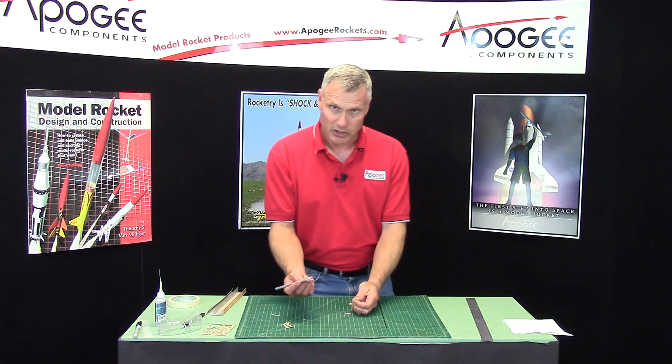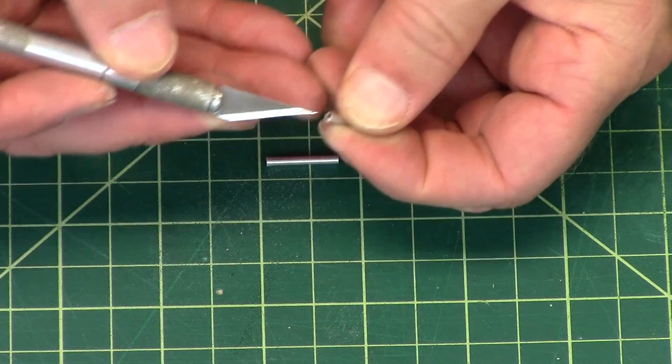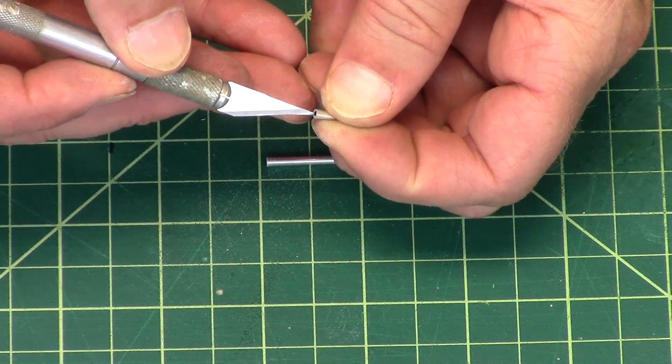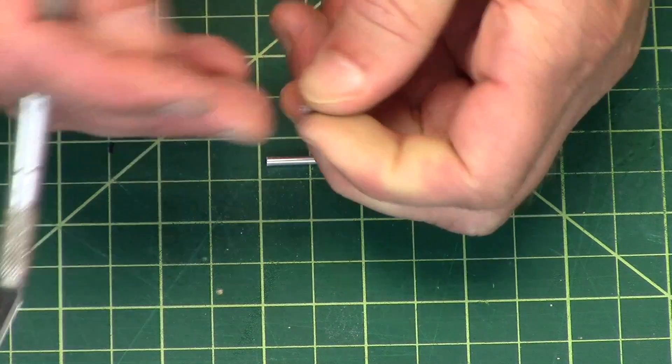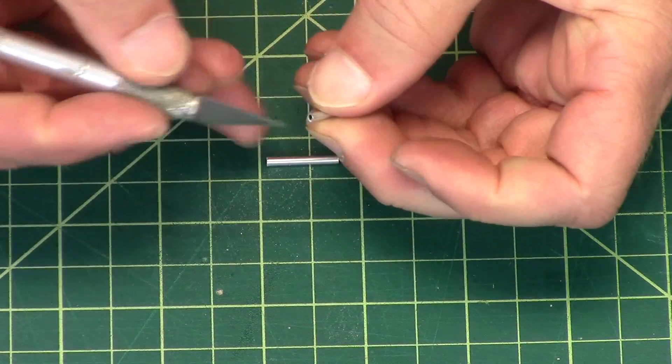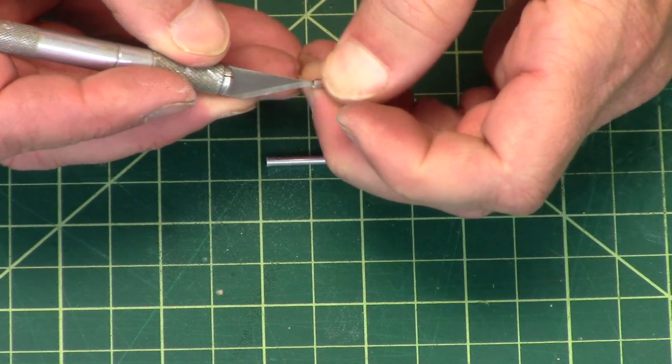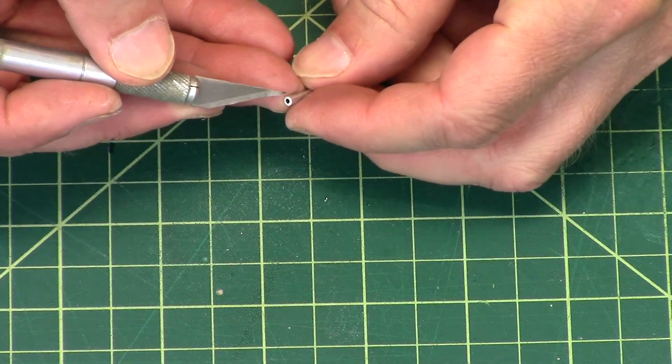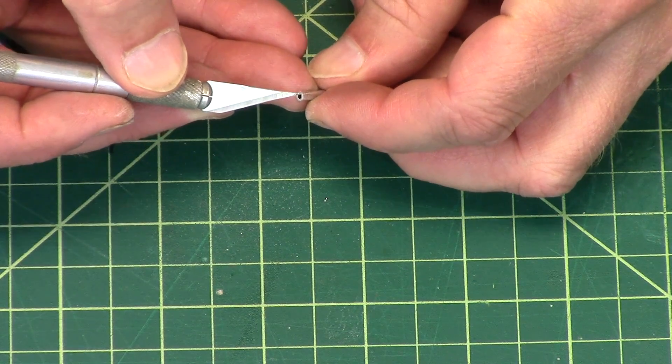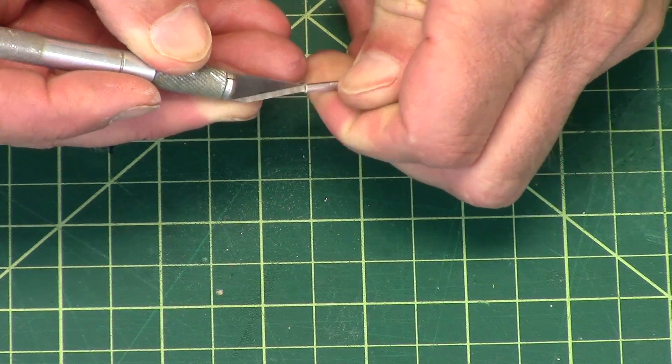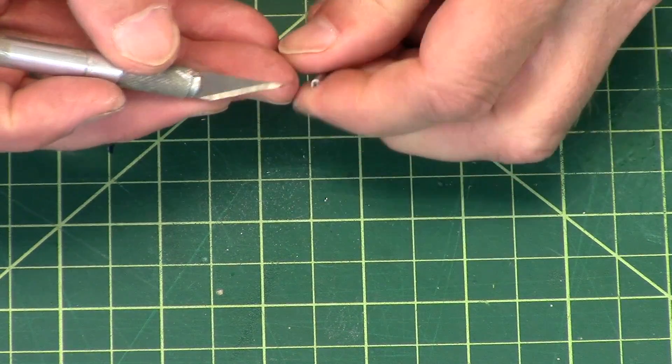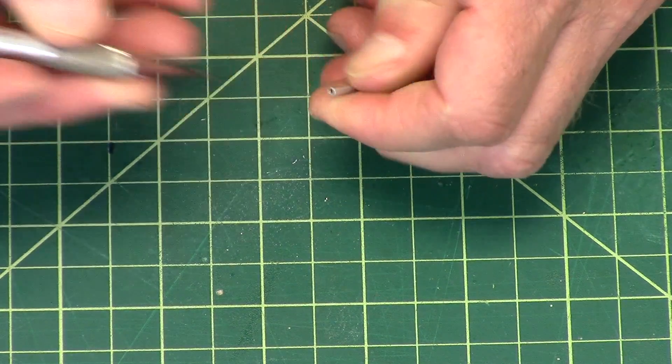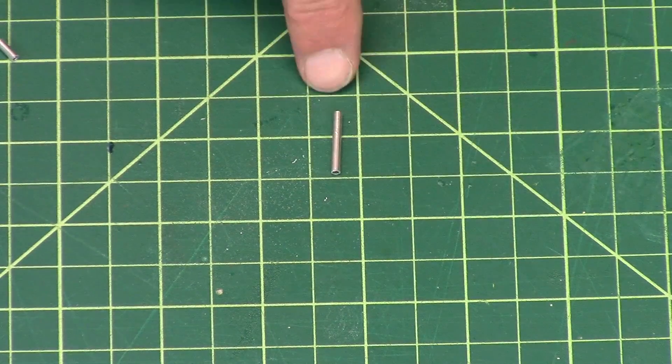And then I want you to take your hobby knife and poke it through the hole and scrape around on the inside of the tube. And do it on both ends for both of the pieces. That's one. Here's the longer one. All right, so I did both pieces.